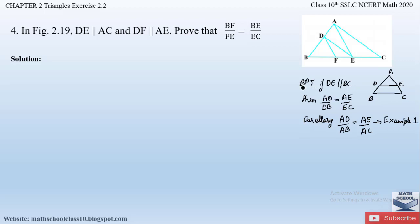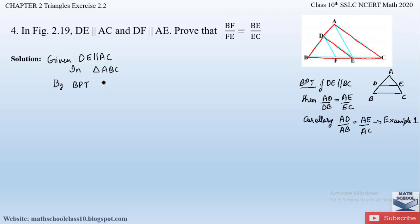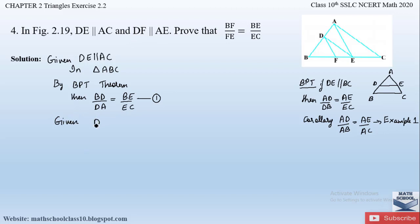Coming back to question number four — given DE is parallel to AC, which is one of the sides of triangle ABC. In triangle ABC, since DE is parallel to AC, by the Basic Proportionality Theorem (Theorem 2.1), we can say that BD/DA is equal to BE/EC. Let this be equation number one.